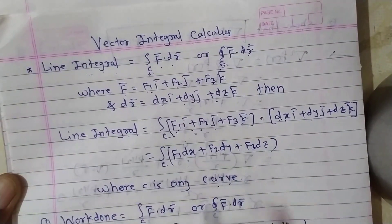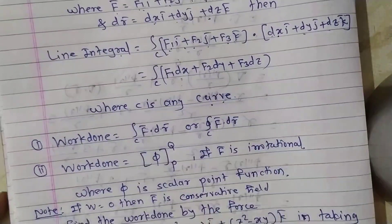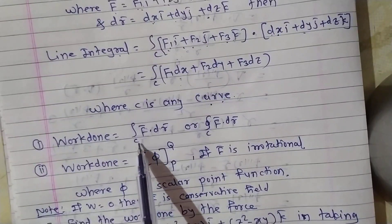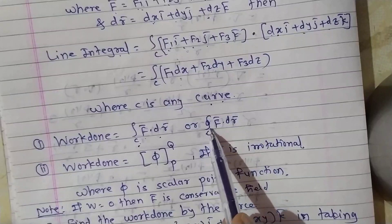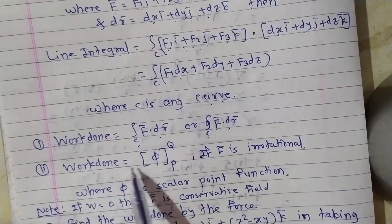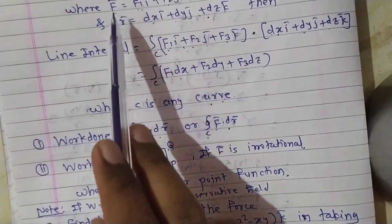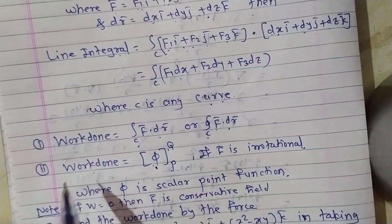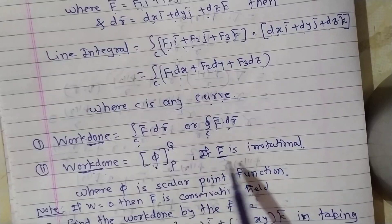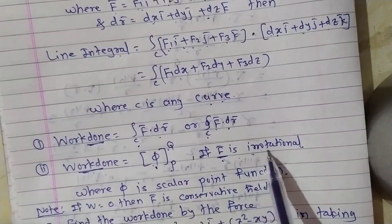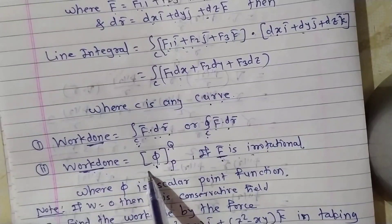One important topic in line integrals is work done. There are two formulas. First, work done = ∫_c f̄·dr̄ (or the closed integral if c is a closed curve). Second, work done = φ evaluated from point P to Q, where φ is a scalar point function. We use this second formula when f̄ is an irrotational vector field. If f̄ is not irrotational, use the first formula. Both give the same answer, but the second is simpler when applicable.